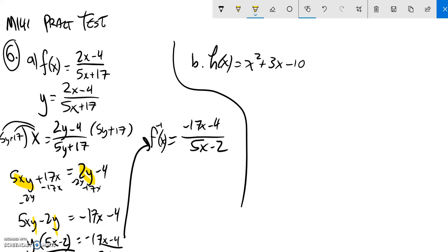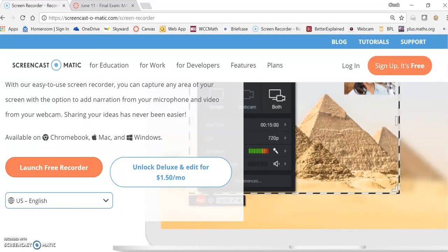Next one, right away, I can stop. It has an x squared in it. That's not invertible. I don't have to do it because it can't be done. There's no full inverse for this.